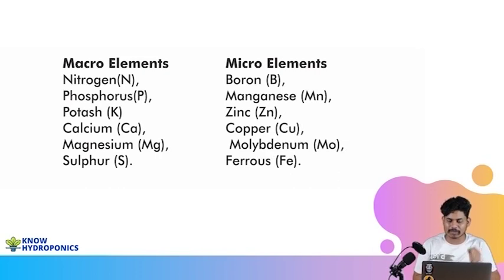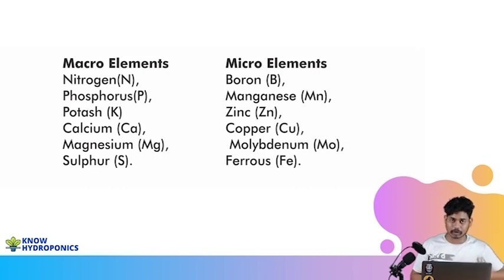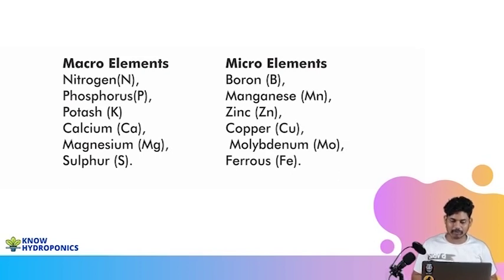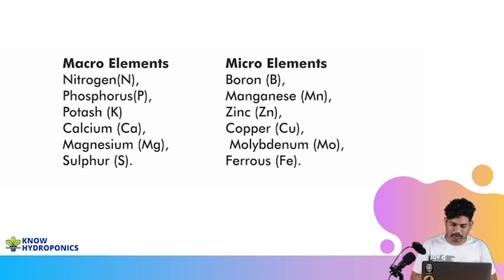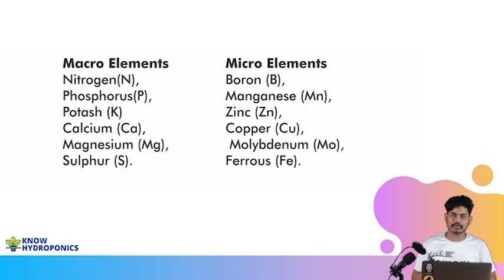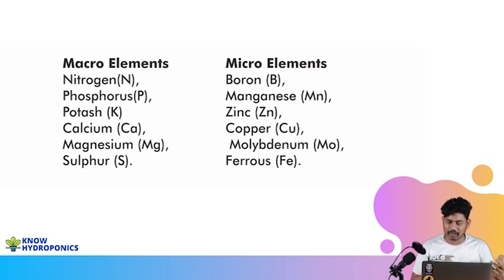When we talk about nutrient solutions, we have to understand whether we're talking about macro elements or micro elements. A lot of people get confused and think they should give everything in equal quantity — that's not how it works. Plants need different elements in different quantities. As we spoke in the last part, we need high nitrogen when we want leafy growth, and we need potassium and phosphorus when we want high root development.